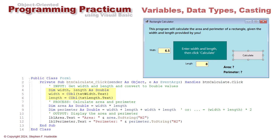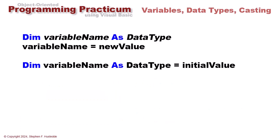We have dim width comma length as double, and then width equals cdbl txt width dot text, and length equals cdbl txt length dot text. Let's unpack those three lines.